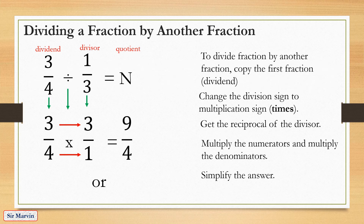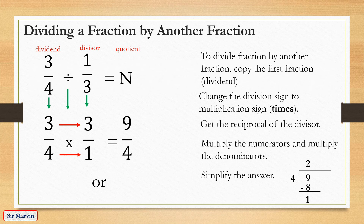Simplify the answer: 9 over 4. Since it is an improper fraction, divide the numerator by the denominator: 9 divided by 4 equals 2 remainder 1. The quotient becomes the whole number, the remainder becomes the numerator, and we copy the denominator — so the answer is 2 and 1 fourth.